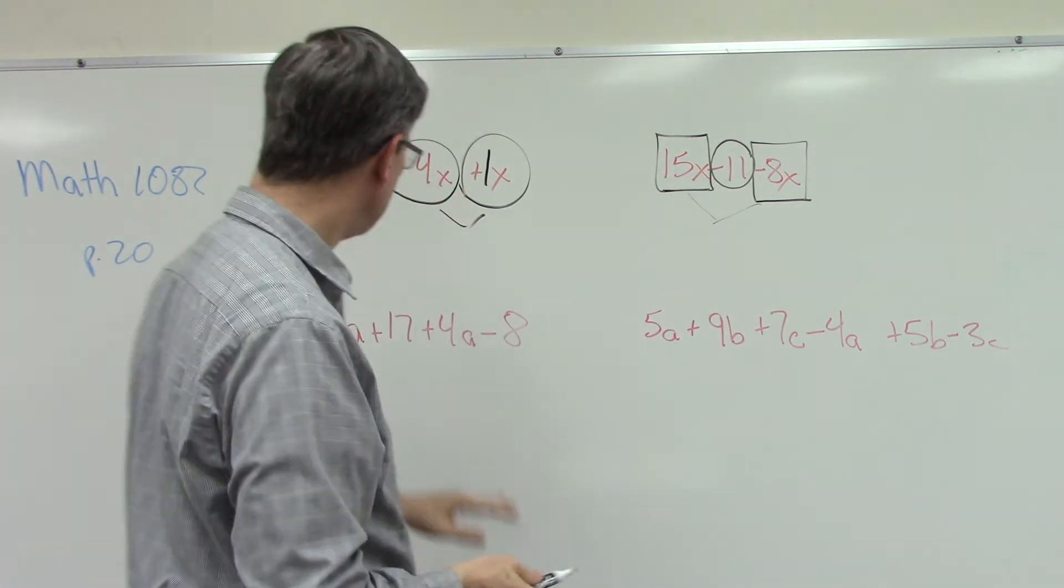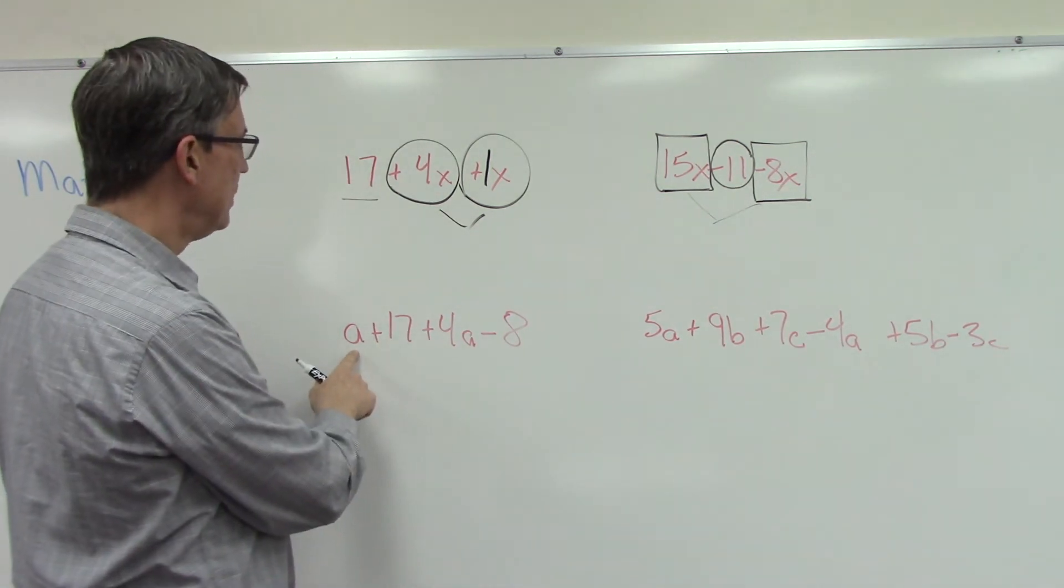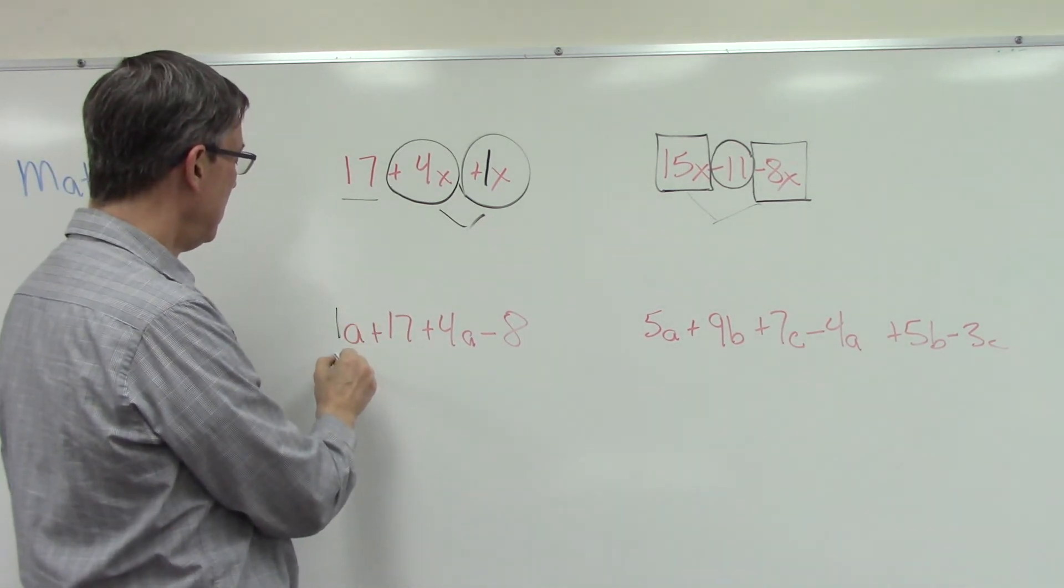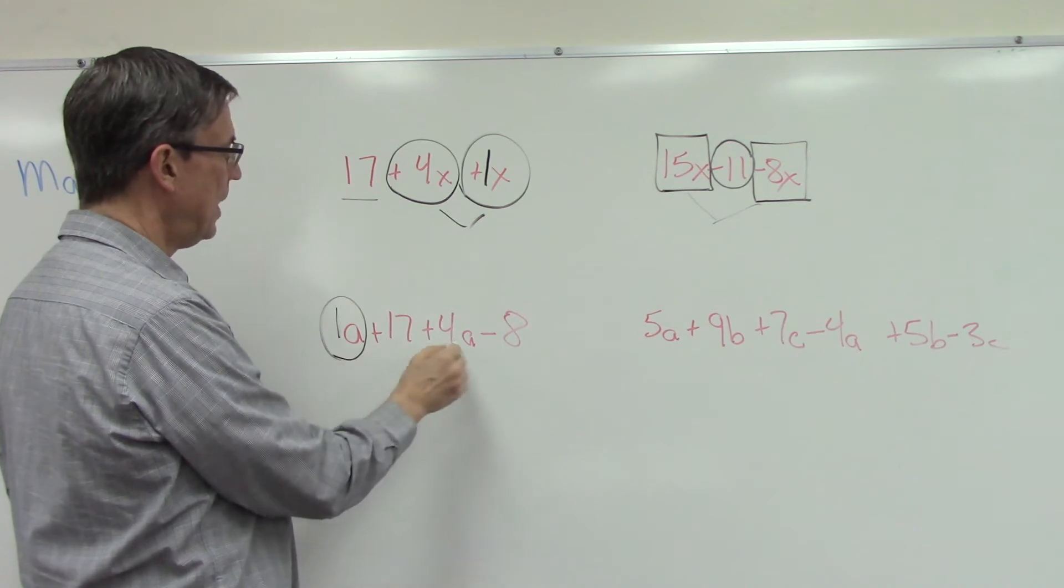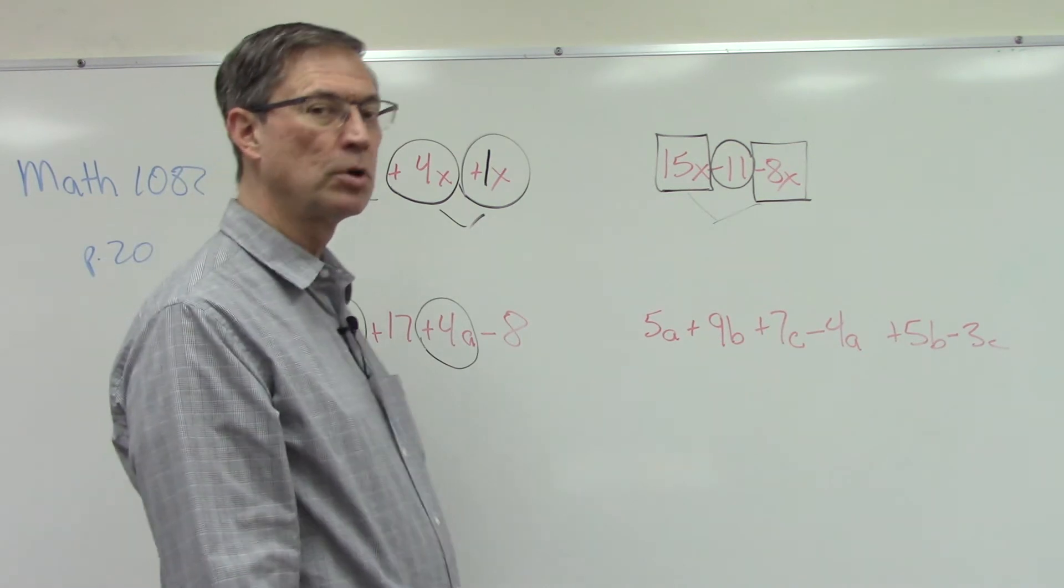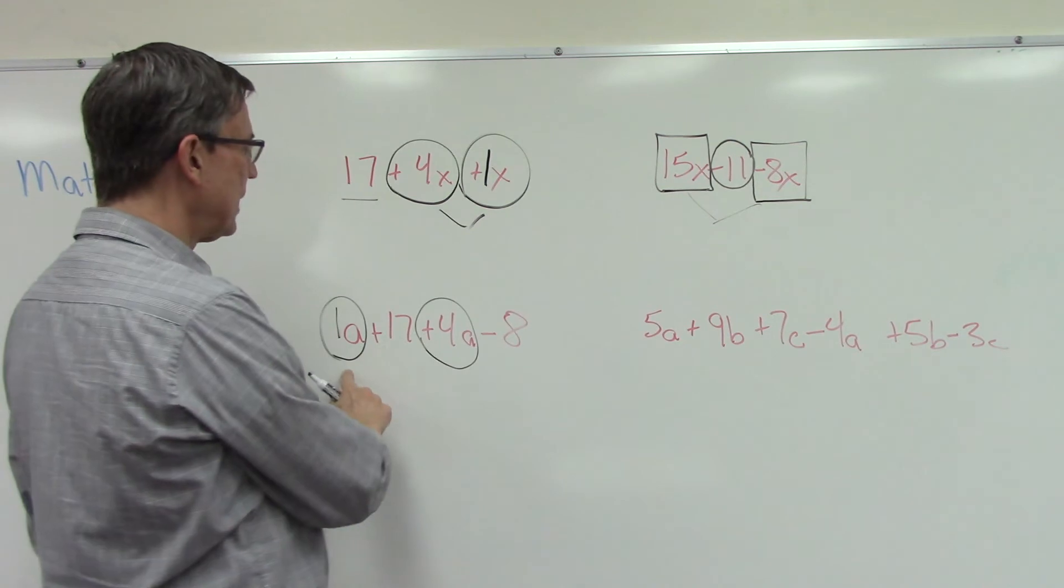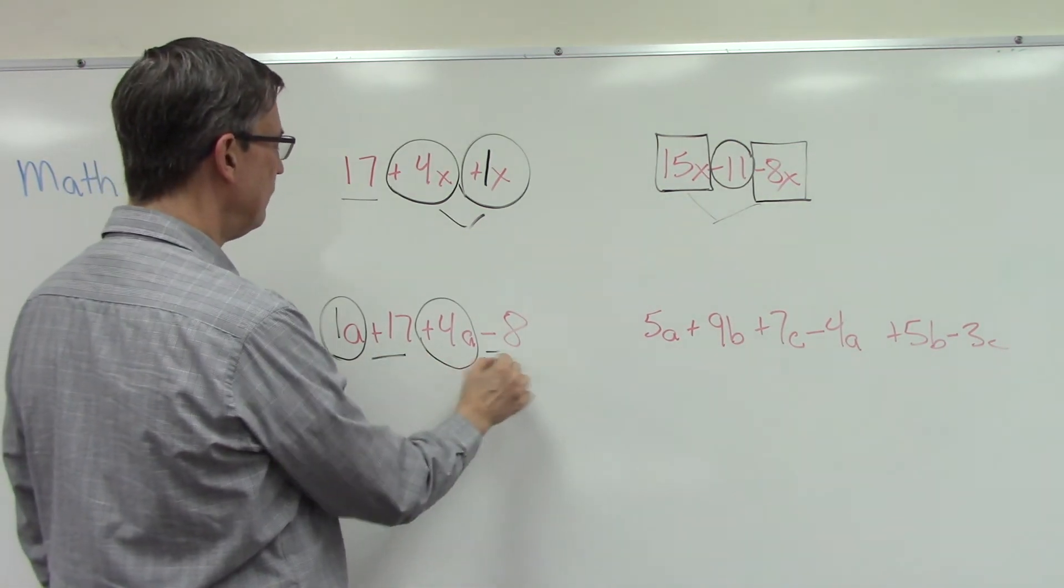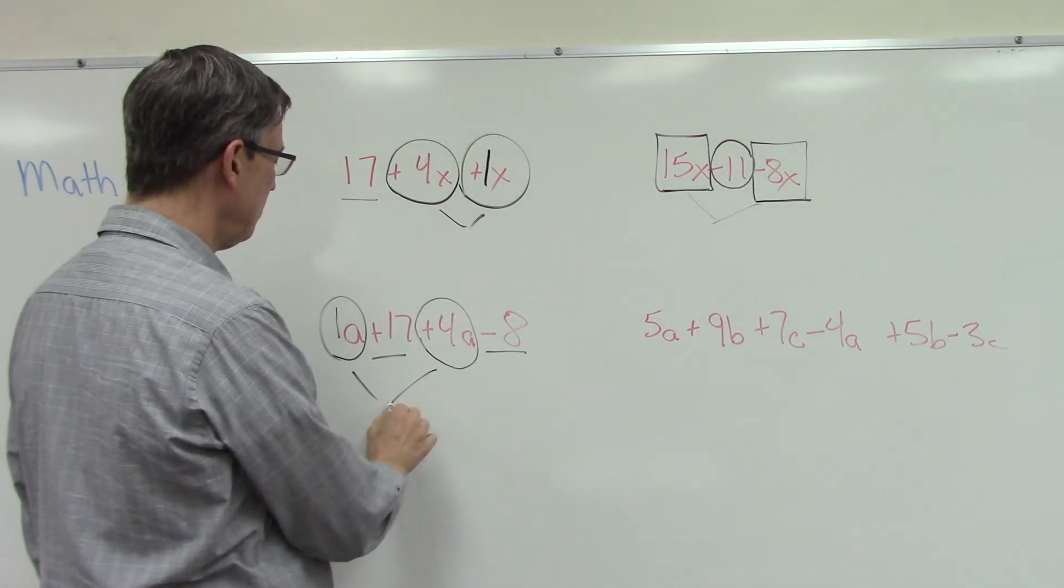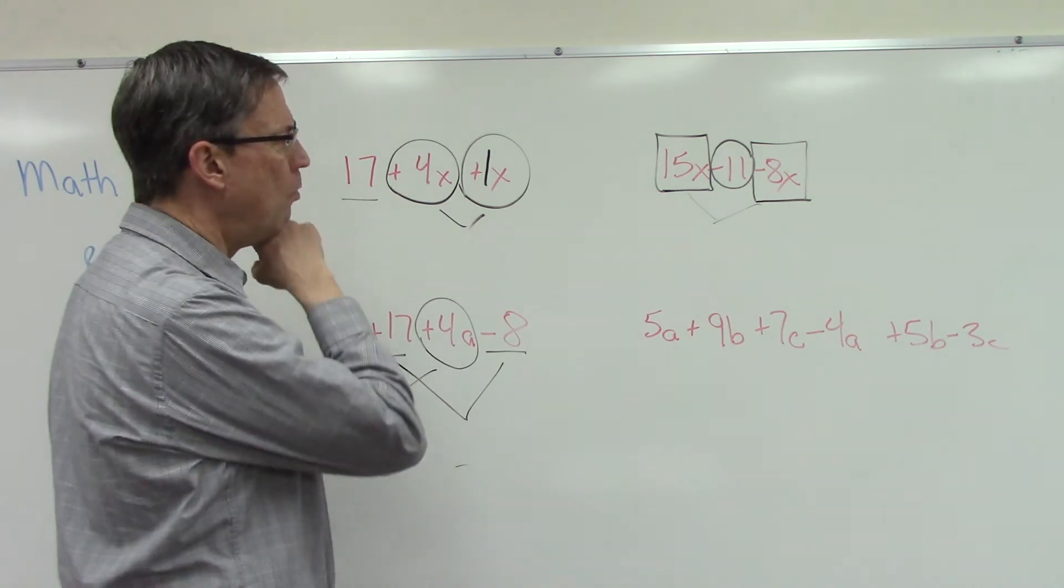All right, let's look at this one. Let's see if we can follow those rules we just talked about. So I see an 'a' term here, but notice there's no number in front of it, so let's add a 1. So now I have 1a and here's a 4a, so I can... I like to put symbols around them: circles, squares, triangles, underlining, clouds, whatever, so that I can match them up and see these are the same. And then I have two numbers: 17 and negative 8. All right, so go ahead and combine those.